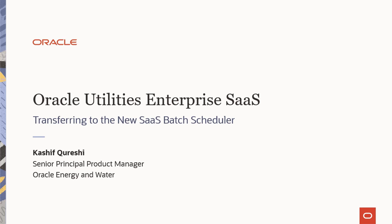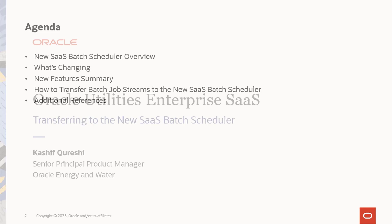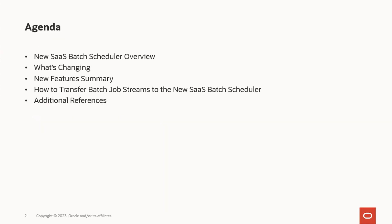In this session, we will talk about features of the SaaS batch scheduler and how existing SaaS customers can transfer batch job streams to the new SaaS batch scheduler. I will give you an overview of the new SaaS batch scheduler, followed by more details on what is being changed and a new feature summary that will benefit your business. Finally, we will discuss what you need to do to transfer your existing batch job stream definitions to the new SaaS batch scheduler and provide you with some additional resources.